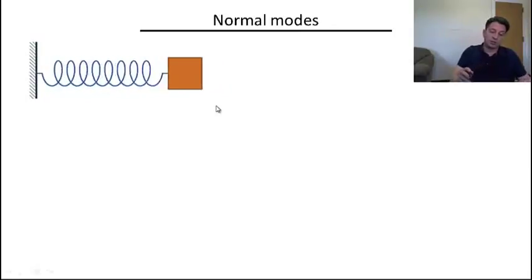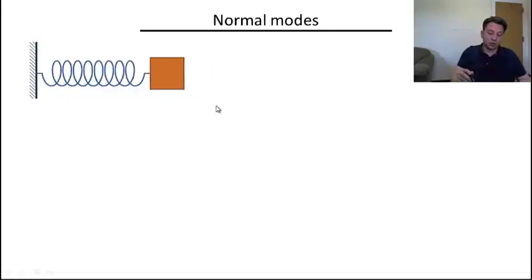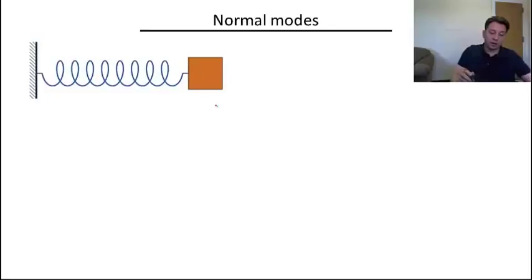So here I have a primitive classical system. If you want, this is a simple harmonic oscillator. And in this case, as we know, the frequency of the oscillation is equal to the square root of the stiffness of this spring divided by the mass of this object.